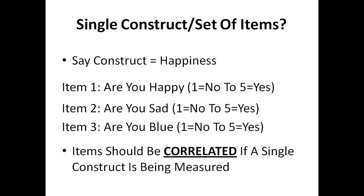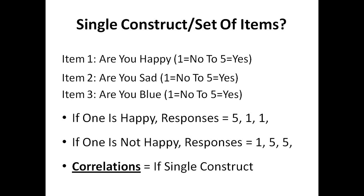Item 1: Are you happy? Answered on a scale from 1, no, through to 5, yes. That item seems to measure happiness. Are you sad? On a scale of 1 to 5. And are you blue? On a scale of 1 to 5. Now, if one person is happy and answers Are you happy? with a 5, the next item — Are you sad? — should probably be around 1, because if the person is at the height of happiness, they should probably not be very sad.